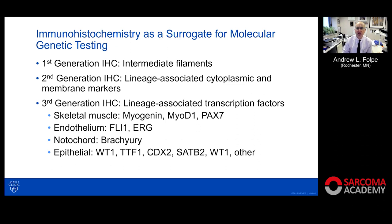Let's jump into immunohistochemistry as a surrogate for molecular genetic testing. Immunohistochemistry has come through generations. Originally we had first generation — largely intermediate filaments like keratins. Then second generation lineage-associated cytoplasmic and membrane markers: things like S100 protein and CD99 for Ewing's tumor. Then a more modern third generation: lineage-associated transcription factors, including skeletal muscle transcription factors like myogenin and MyoD1, endothelial transcription factors FLI1 and ERG, notochordal markers like brachyury, and many epithelial markers for carcinoma.